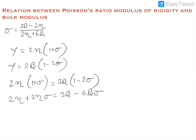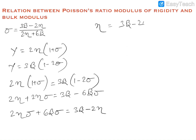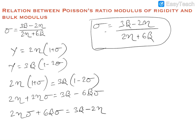Rearranging such that we isolate sigma: 2 eta sigma plus 6 beta sigma is equal to 3 beta minus 2 eta. Therefore sigma is equal to (3 beta minus 2 eta) upon (2 eta plus 6 beta). This is the required relationship between Poisson's ratio, bulk modulus, and modulus of rigidity.